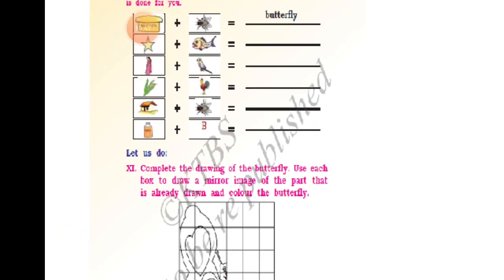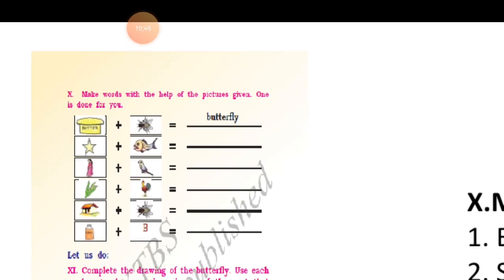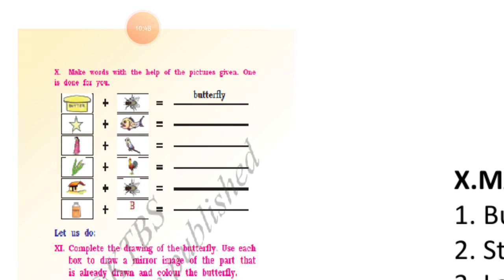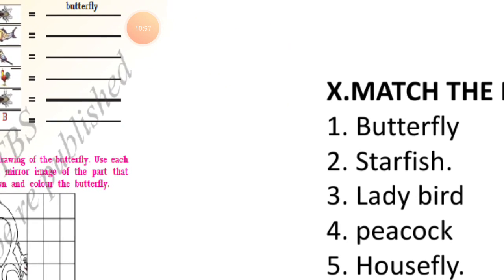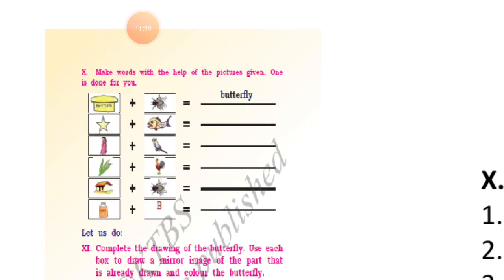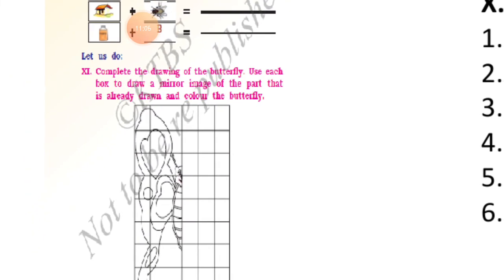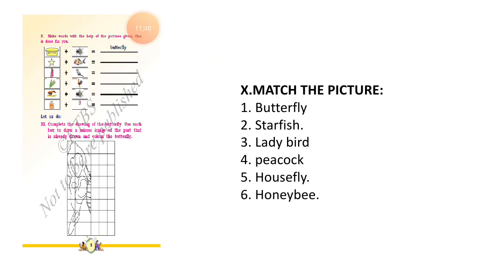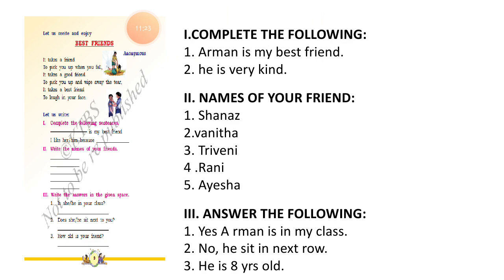Page number eight, Roman numeral ten: make words with the help of the pictures given. The first one is done for you — butterfly. Find out the rest: starfish, ladybird, peacock, housefly, honeybee. They are also asking you to complete the drawing of the butterfly — draw a mirror image of the part already drawn in each box and color the butterfly.